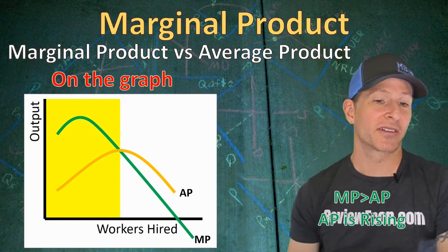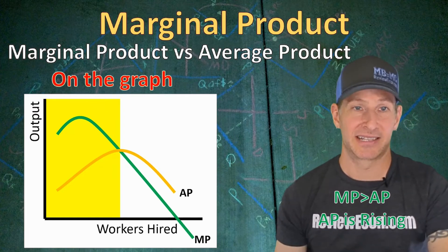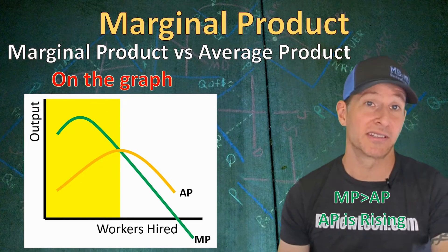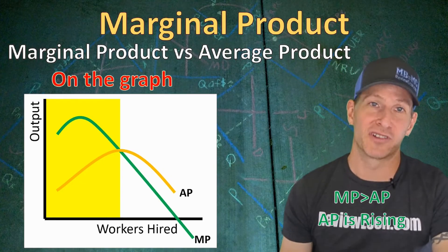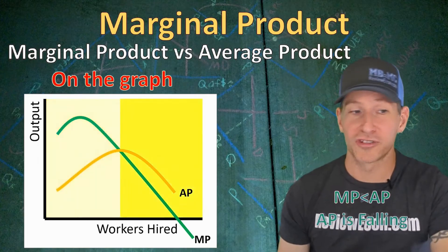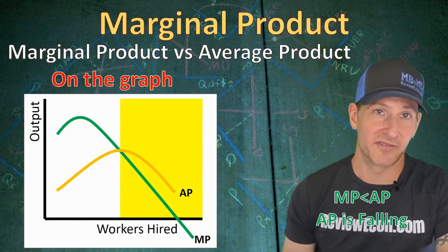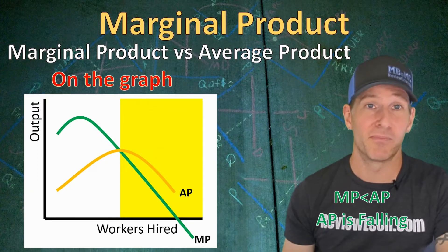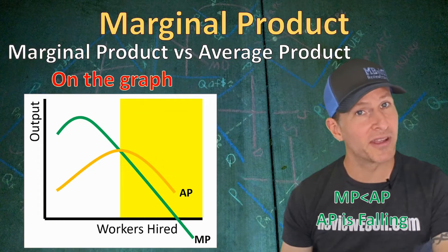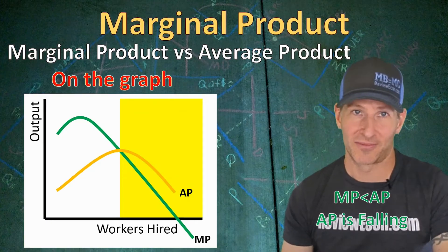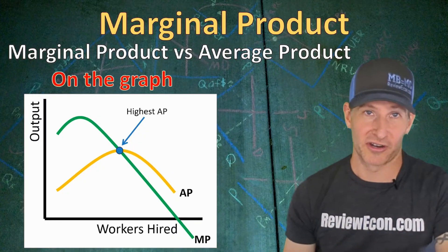When we graph it out, as long as the marginal product curve is above the average product curve, the average will be rising — because the marginal is the value of the next piece, and as long as the next piece is greater than the average, the average increases. When the marginal product curve falls below the average product curve, the average product will begin to fall. The highest point of the average product curve will be where it intersects the marginal product curve.